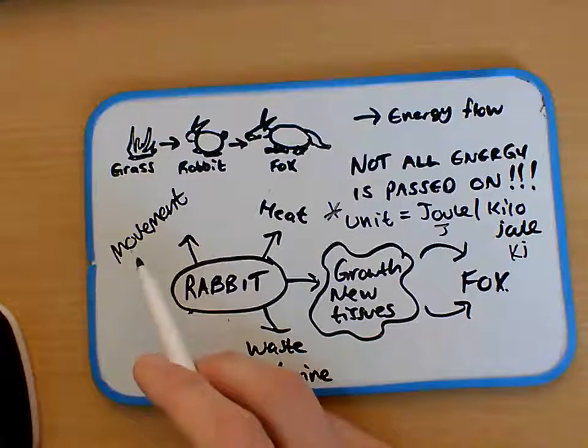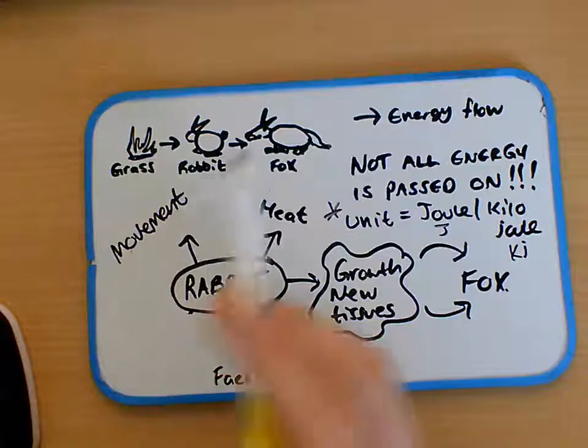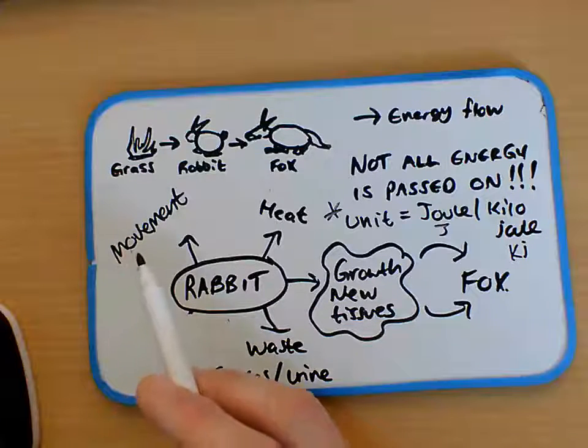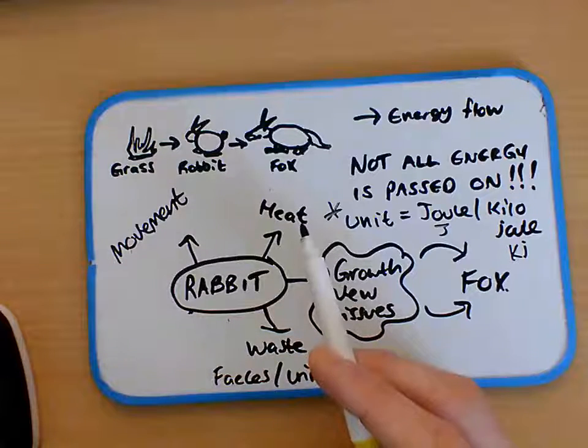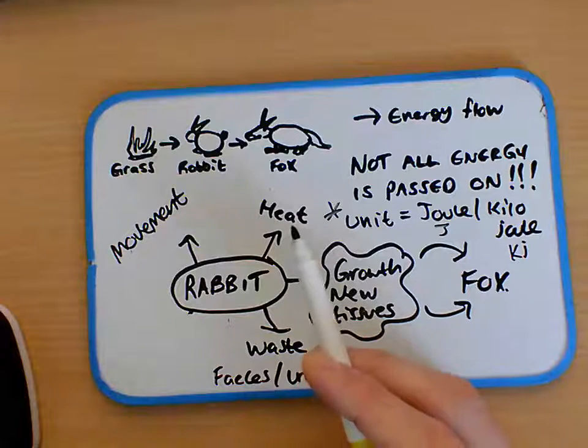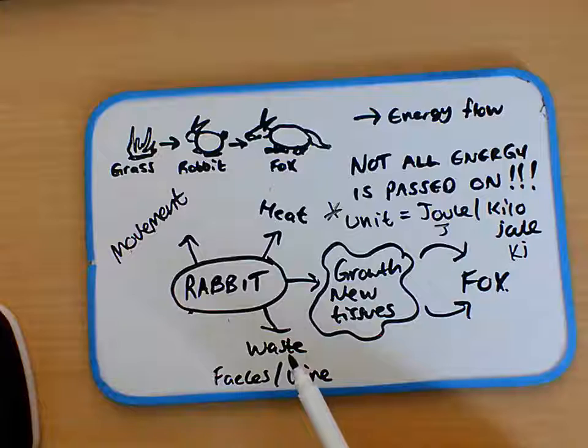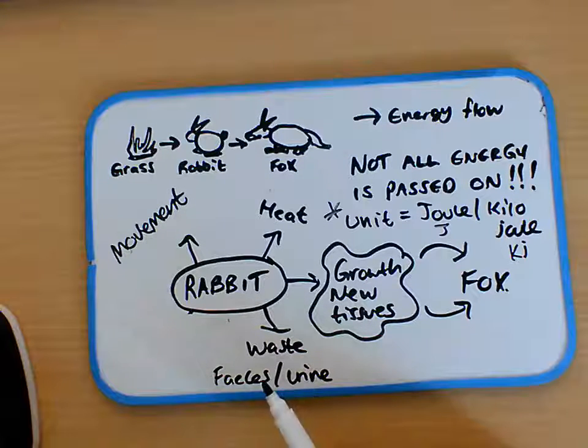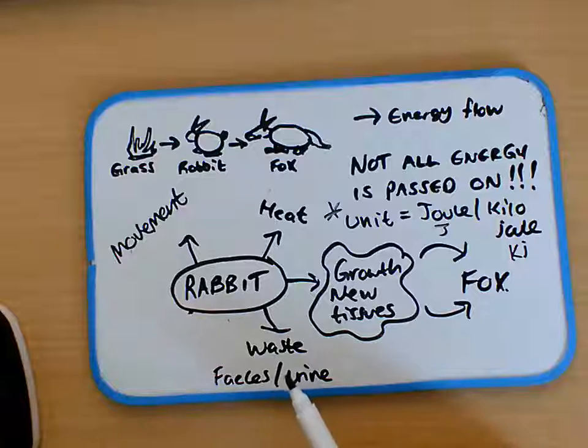The rabbit for its daily life is going to move around looking for food, trying to escape the fox, trying to find a mate, finding shelter. That's going to take up energy. It's going to try to keep warm because it's a mammal. That's going to use up energy as well. It's going to pass out waste, which is feces or urine, so that's going to use up some of the energy as well.